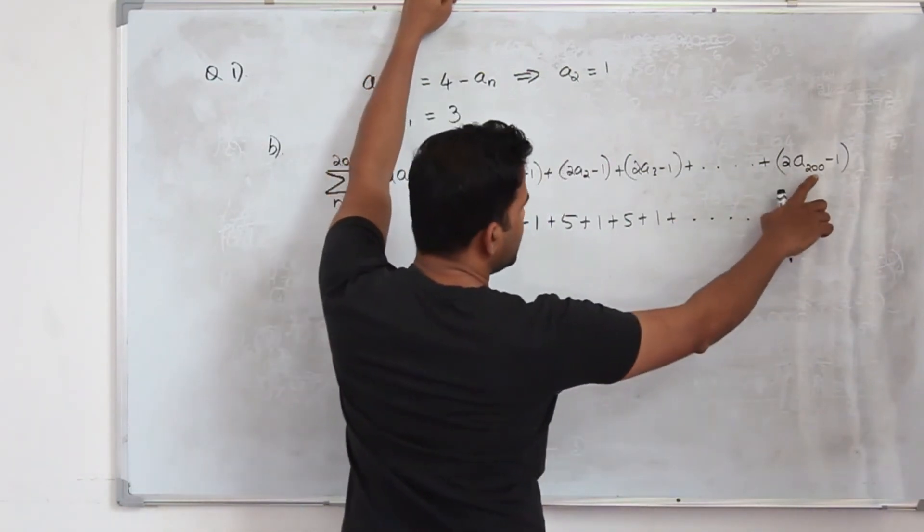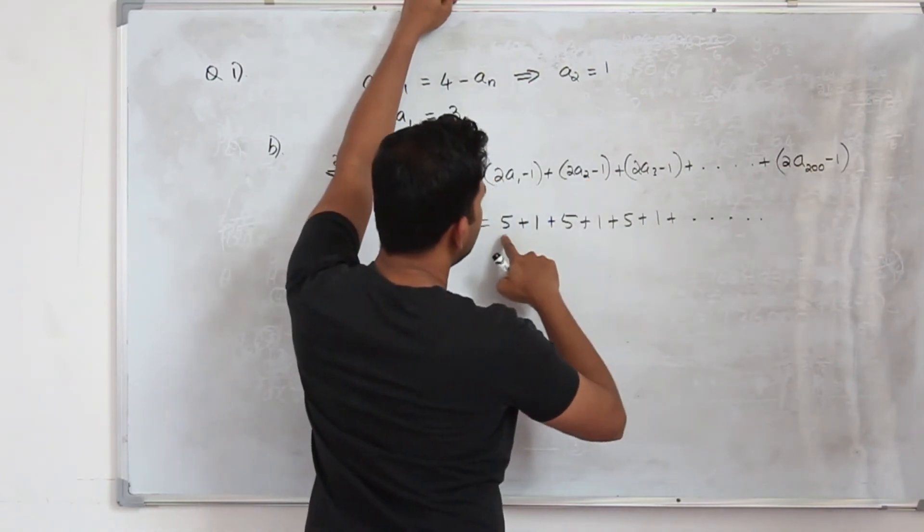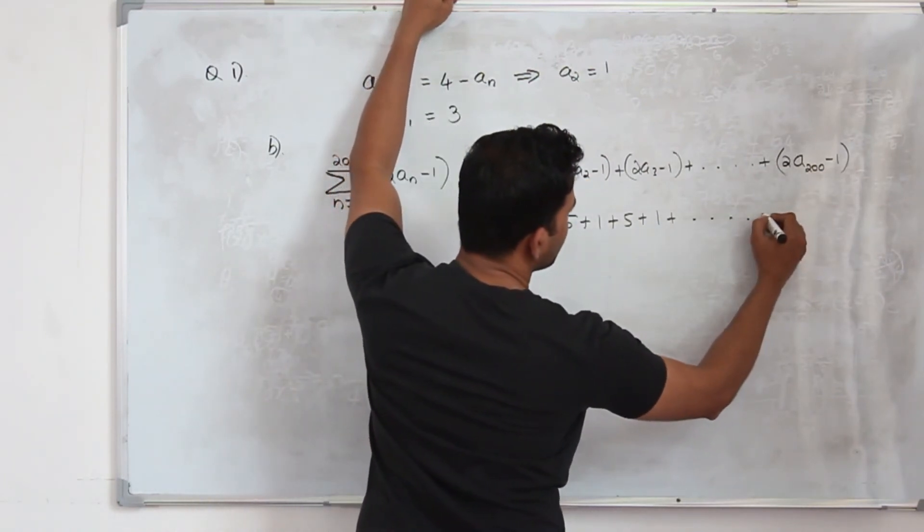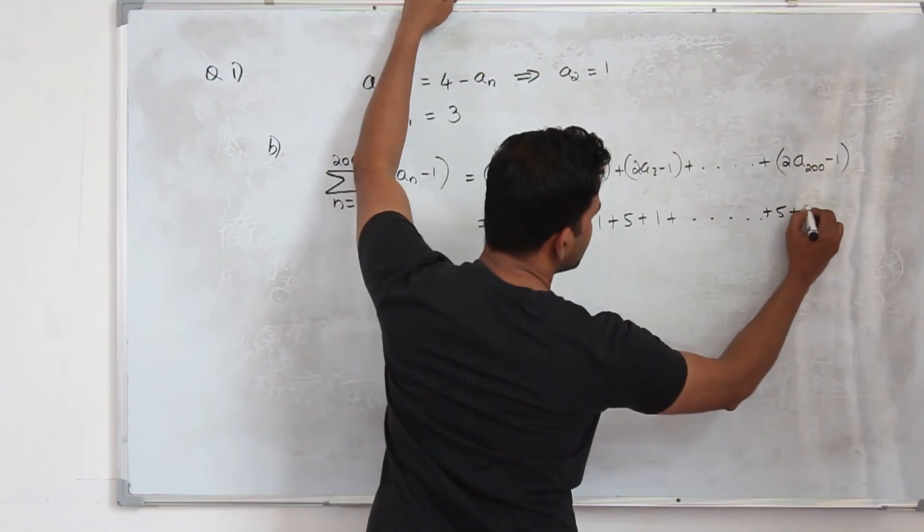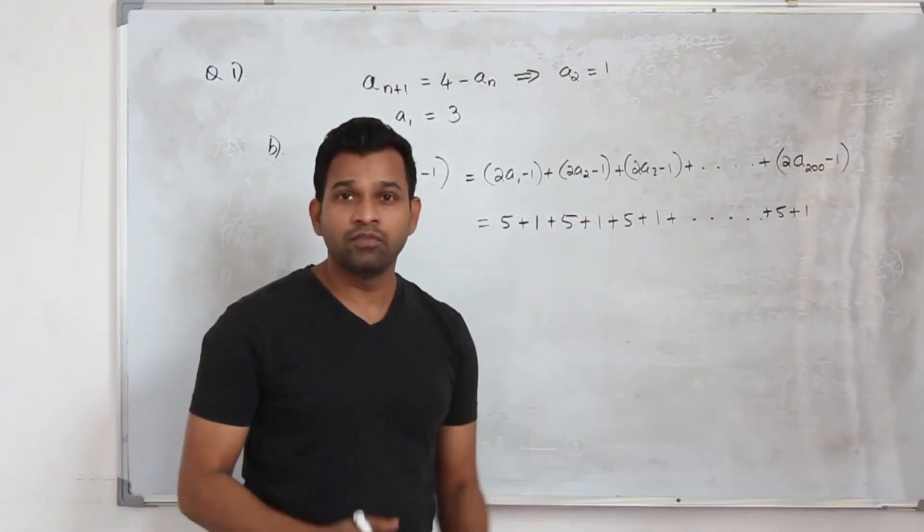This is the 200th term. 200 is an even number, so it will be 1. Or maybe you will have 5 plus 1.